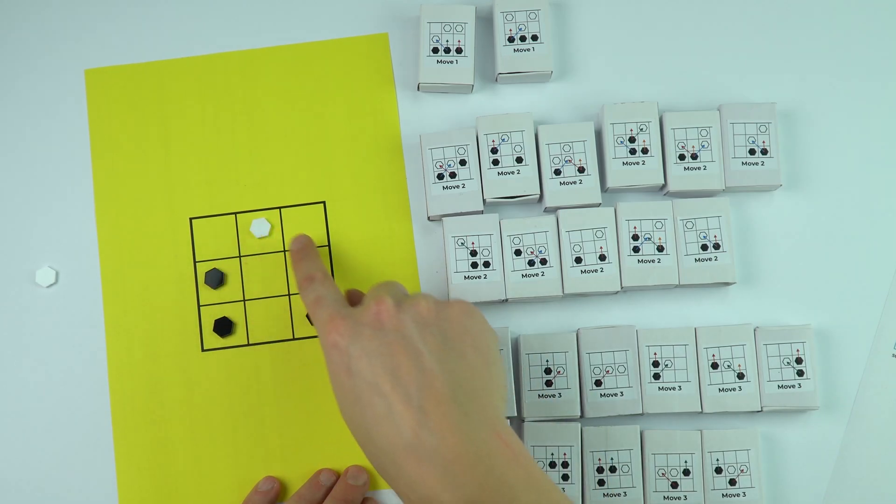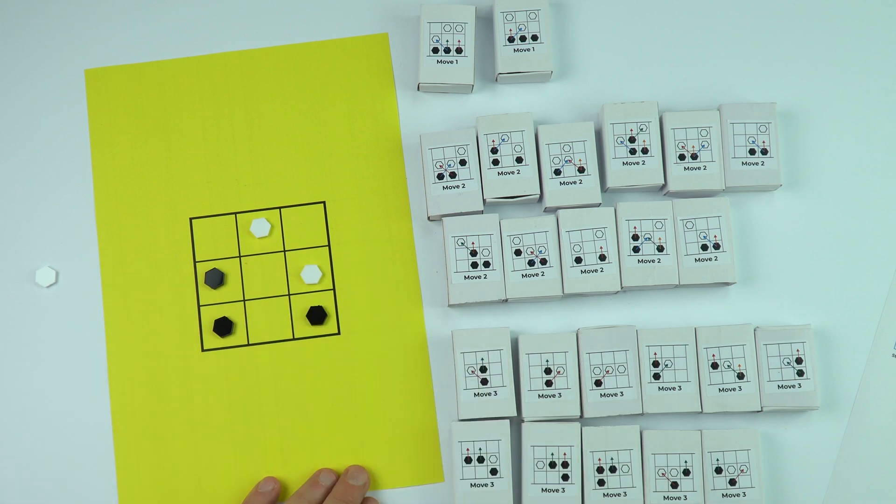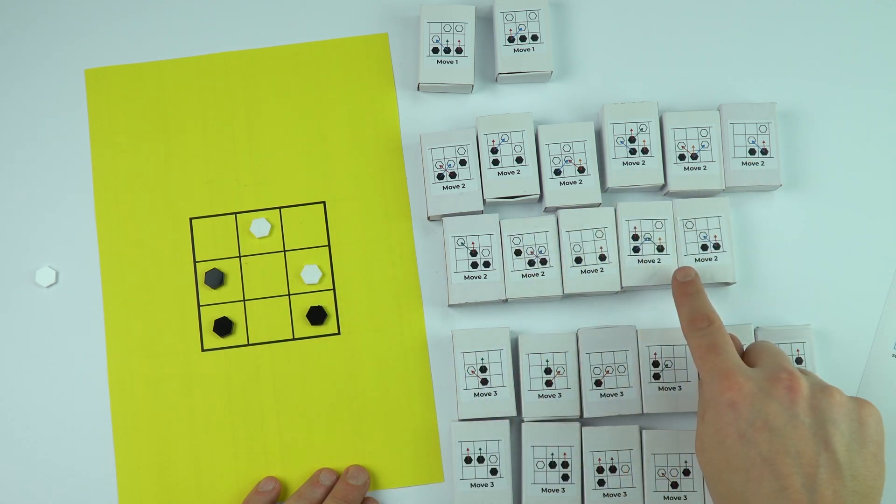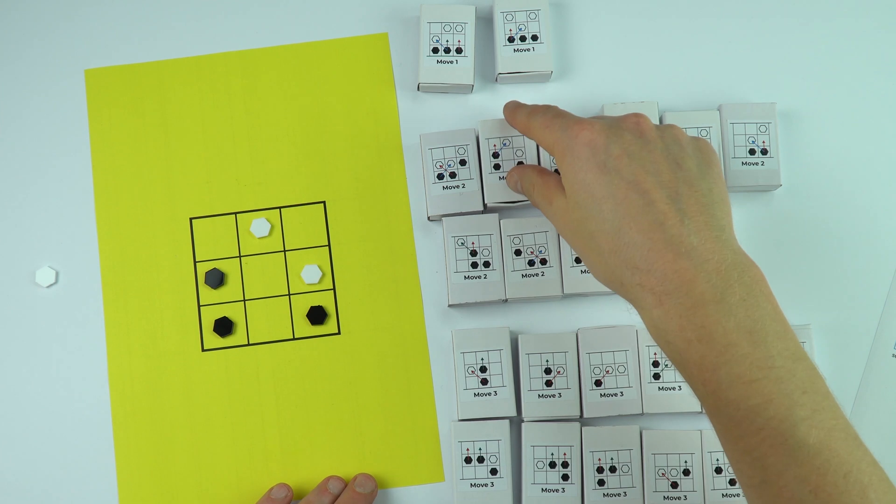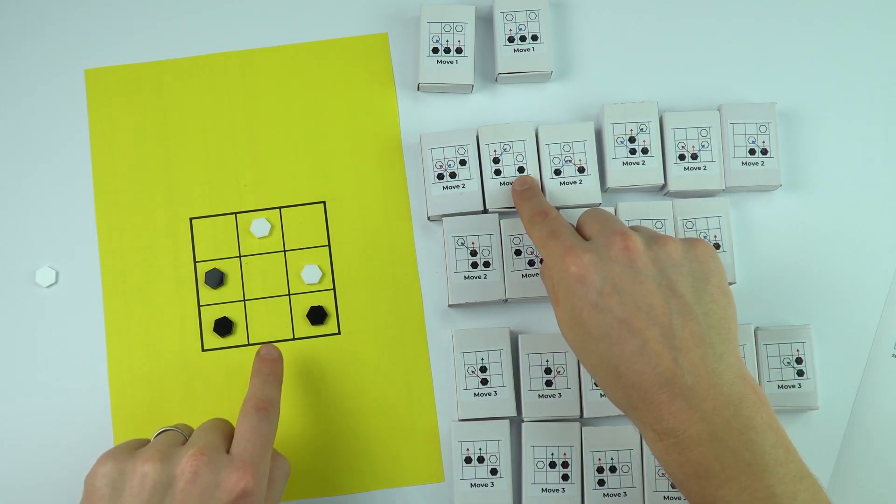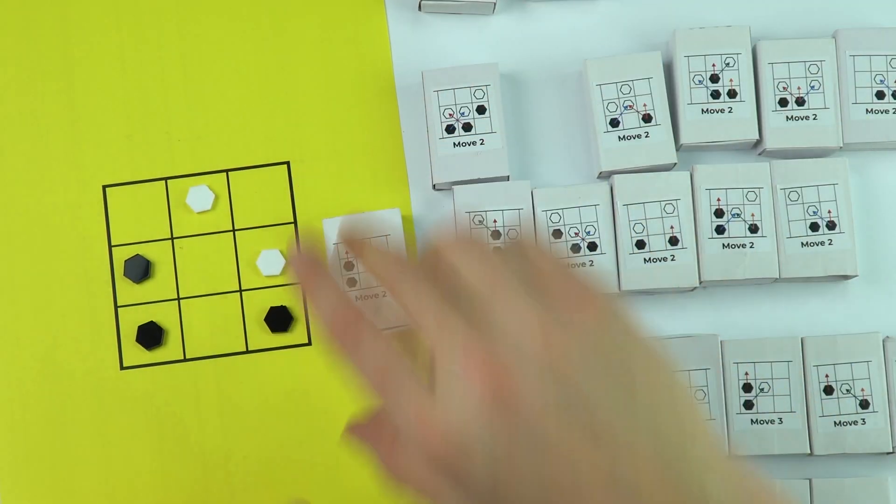What I need to do is find the box that relates to this. I've got the three black down here and the two white pieces. Looking at move two, it's this one over here. This is the pieces that we have on the board at this time.